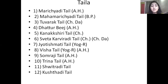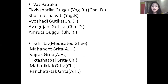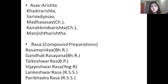There are many Taila preparations which can be used externally: Marichyadi Taila, Mahamarichyadi Taila, Tubrak Taila, Tanakshiri Taila, Jyotishmati Taila, Somaraji Taila, Shwitra Adhi Taila, Kushthaghna Taila, etc. Some important Siddha Yoga Dravyas are Kvaths like Dhatri Khadira Kvatha, Manjishthadi Kvatha or Khadira Kvatha, Patola Muladhi Kvatha; Churnas which can be used: Pancha Nimbadi Churna, Triphala Churna, Somaraji Churna, Bakuchi, etc. Some examples of Vati: Shashilekha Vati, Vyoshadi Vati, Avalbuch Adhi Vati, Amrita Guggul. Ghrita preparations which are used: Mahatnimba Ghrita, Vajra Ghrita, Tikta Ghrita, Mahatikta Ghrita, Pancha Tikta Ghrita, etc. Asavarisha: Khadirarishta, Sarivadyasava, Mahamanjishthasava, Kanakabindu Arishta, etc. Rasa preparations: Rasa Manikya, Gandhaka Ghritasayana, Tarkeshwar Rasa, Namakeshwar Rasa, etc.